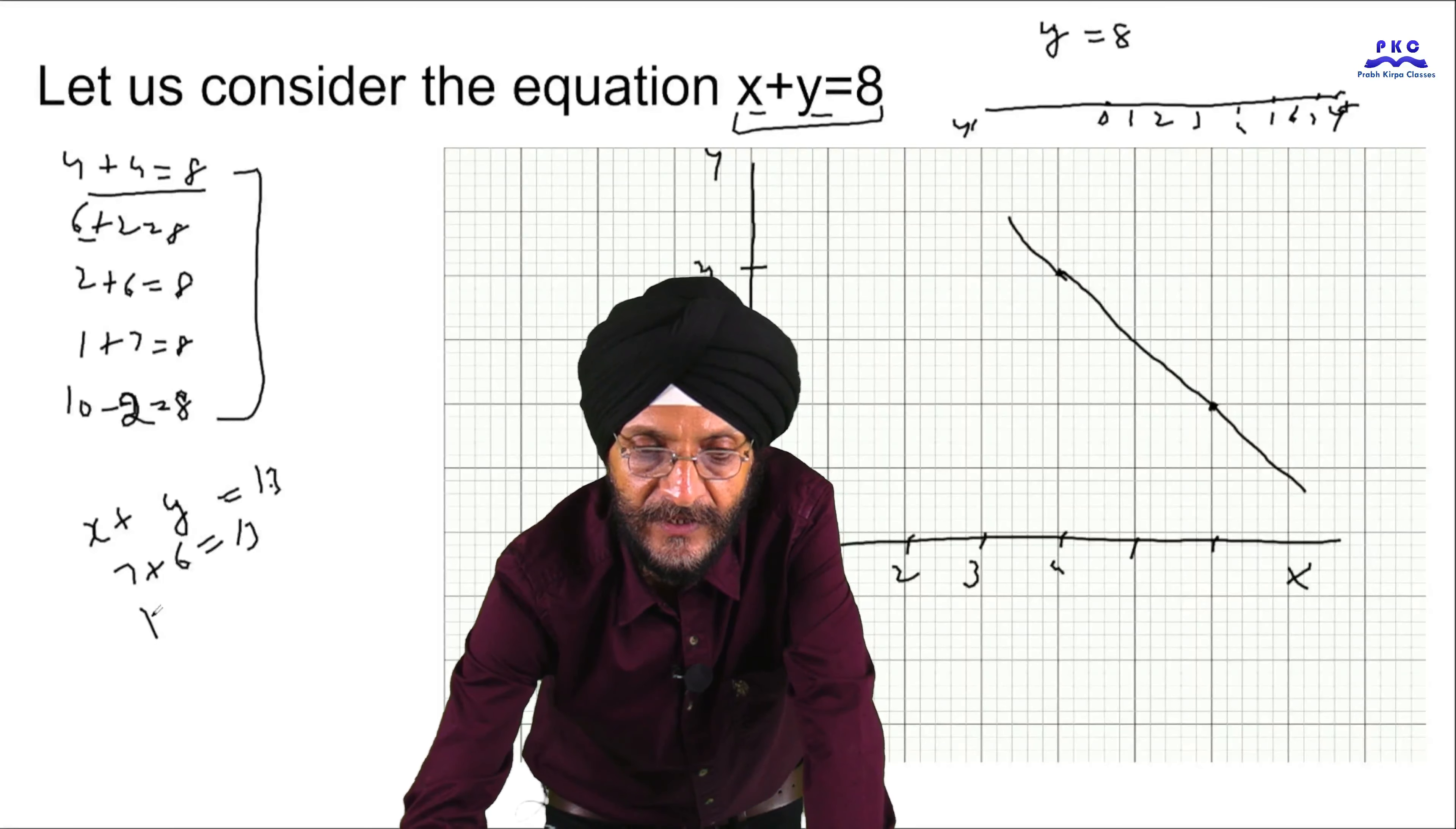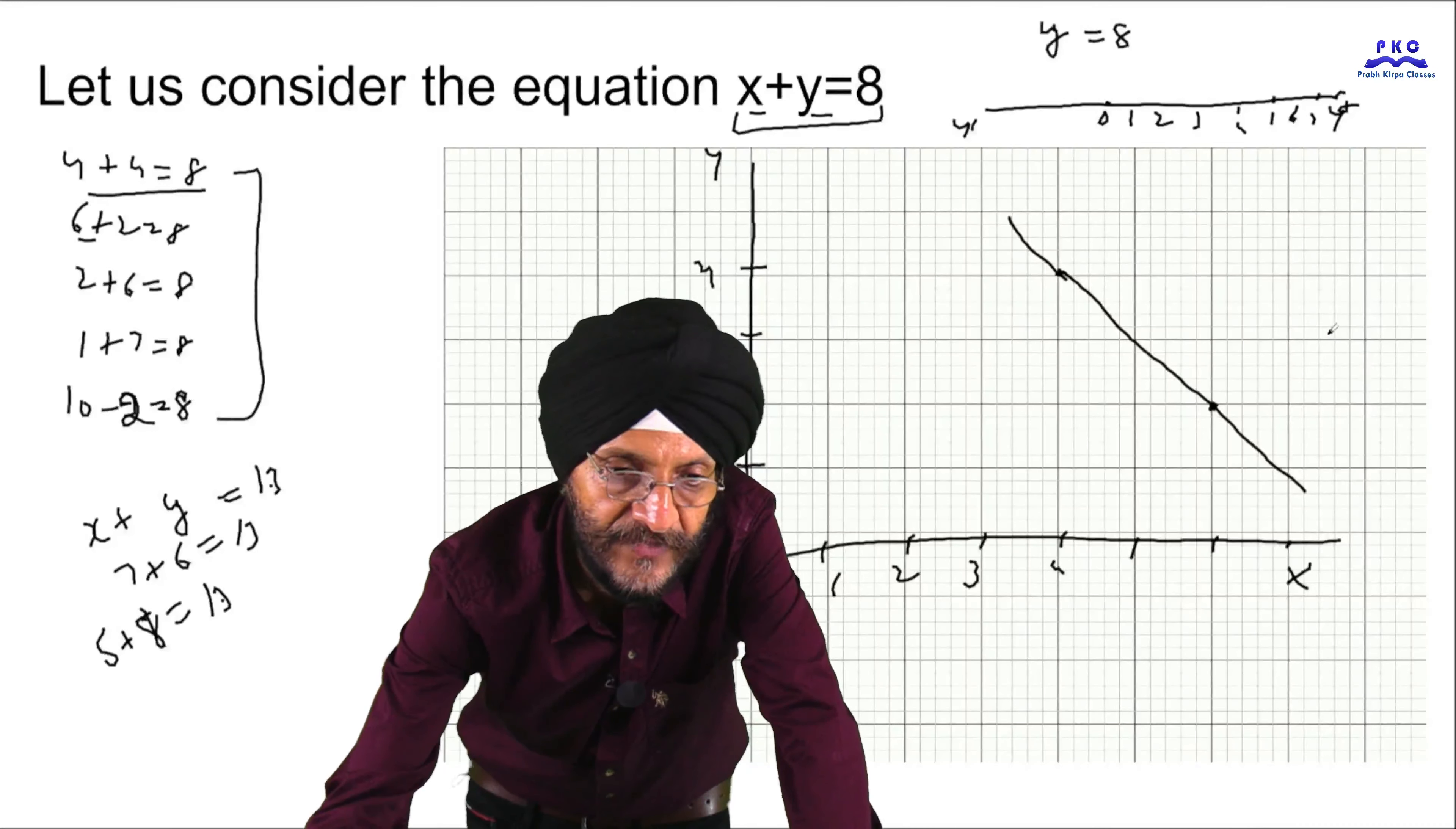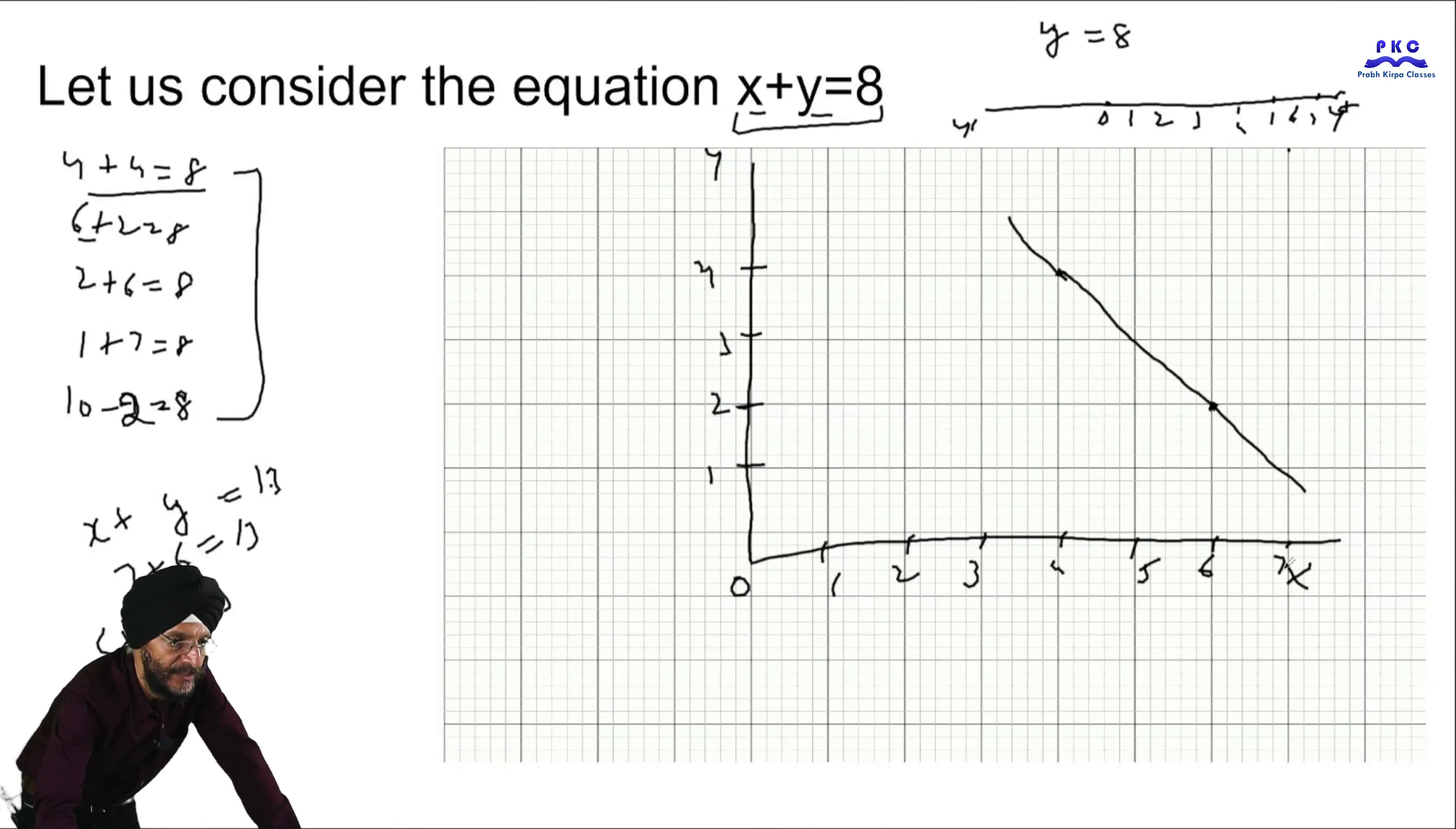It may be 5 plus 8 is equal to 13. Then again, you will have to form the graph on the basis of the same. That is 7, this is the 7, this is the X, this is 7, this is the 6, 6 may be somewhat like here, this is 5, 6, this is 7. 7 here becomes 5, it is 6.